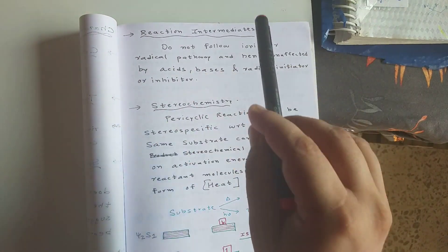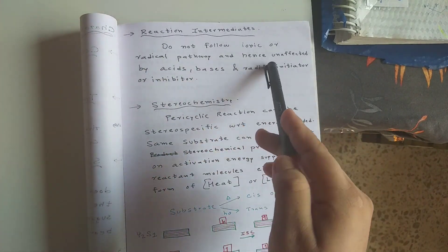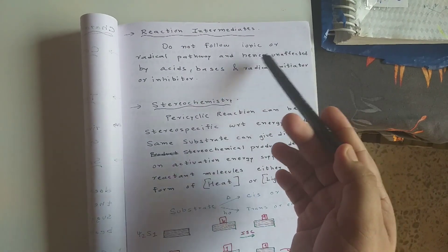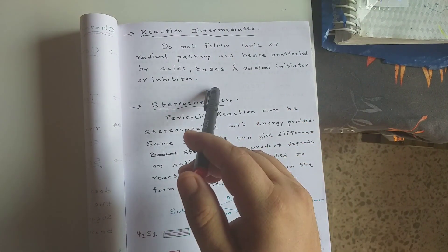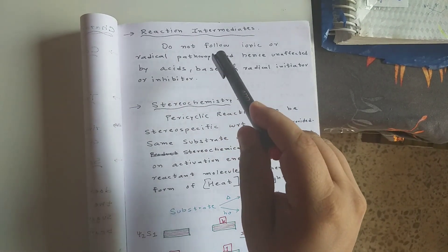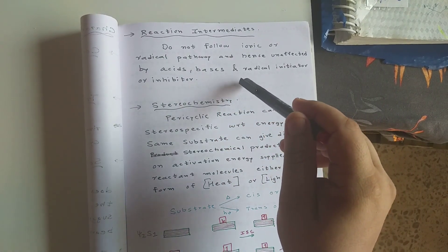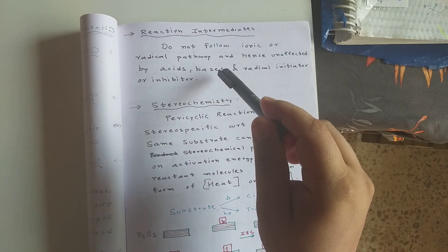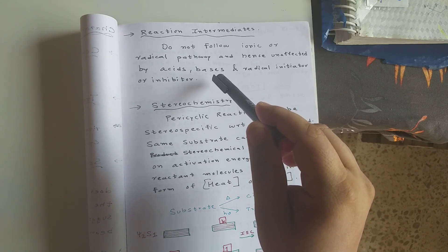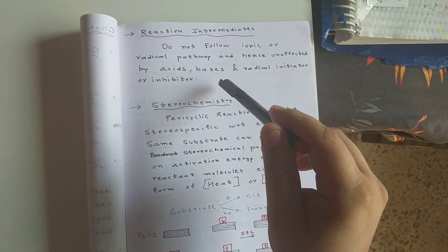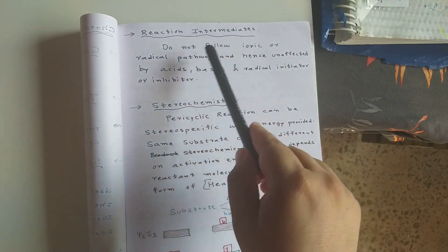Pericyclic reactions do not follow an ionic or radical pathway — there is no reaction intermediate — and hence they are unaffected by acid, base, radical initiators, or inhibitors. However, some reactions that are thermally forbidden by pericyclic theory can still occur at high temperature by following a non-concerted mechanism, meaning they follow a radical or ionic pathway instead.